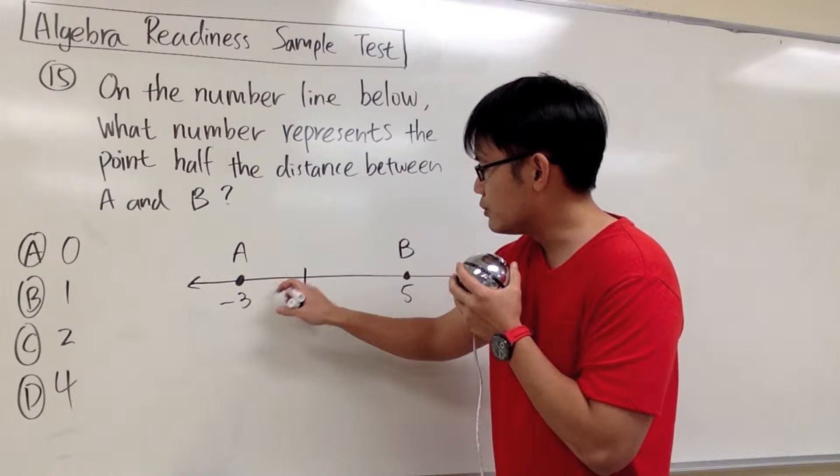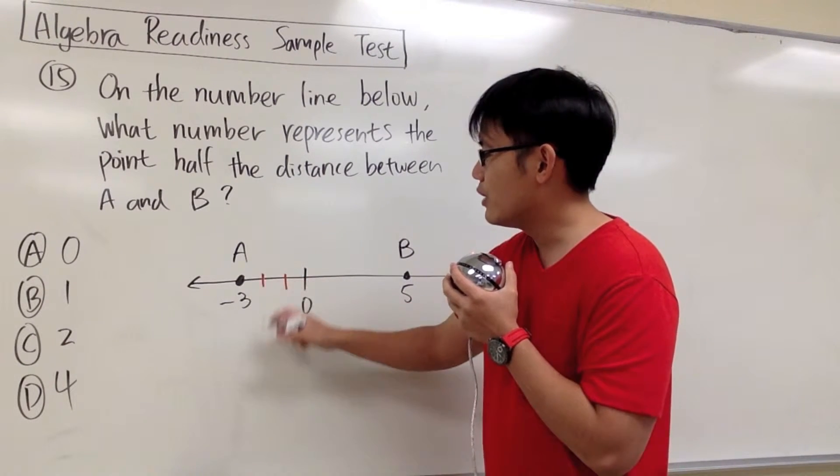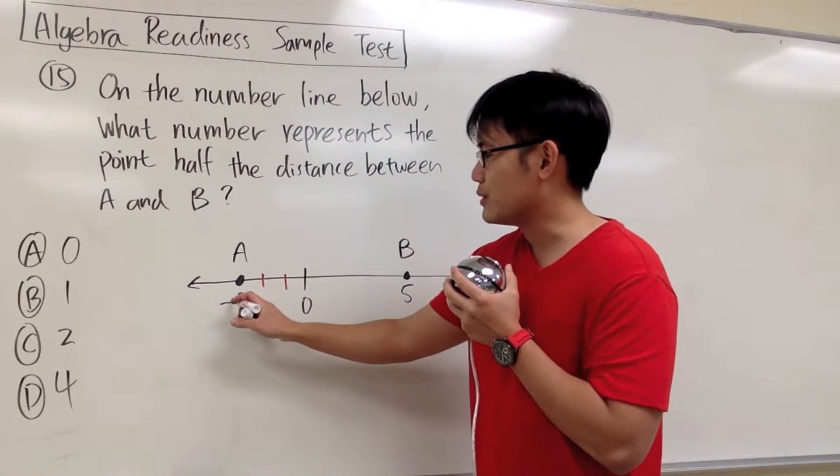And if I move from 0 to the left, 1 unit, that would be negative 1. Moving again, we will get negative 2, so that we can end up with negative 3 right here.